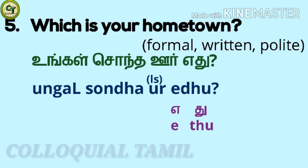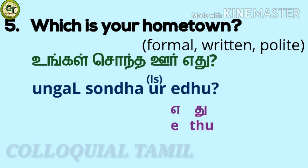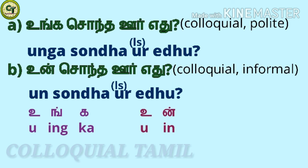To ask 'which is your hometown?': 'unngal sondhoor yedhu'. This is in formal written and polite form. You already know 'unngal' and 'sondhoor'. For 'yedhu': 'a' a short vowel, 'to' a short letter. Together: yedhu. Unngal sondhoor yedhu. The colloquial polite form is 'unng sondhoor yedhu' — for 'unng', you just remove the consonant 'al' at the end of 'unngal'.